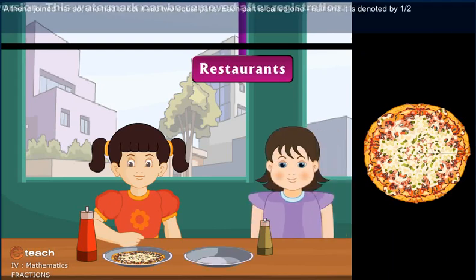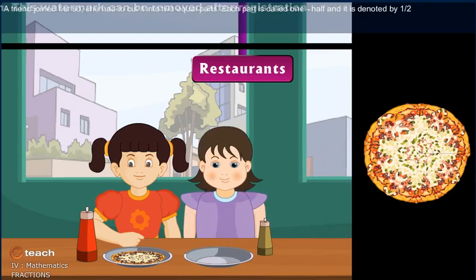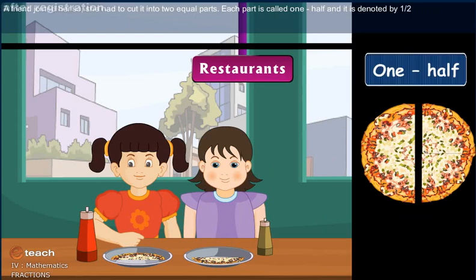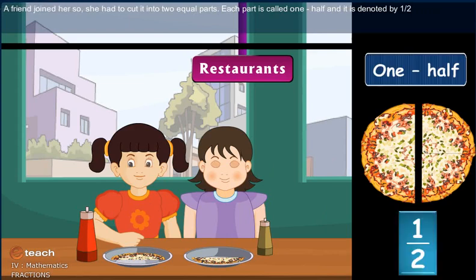A friend joined her. She had to cut it into two equal parts. Each part is called one half. It is denoted by one by two.